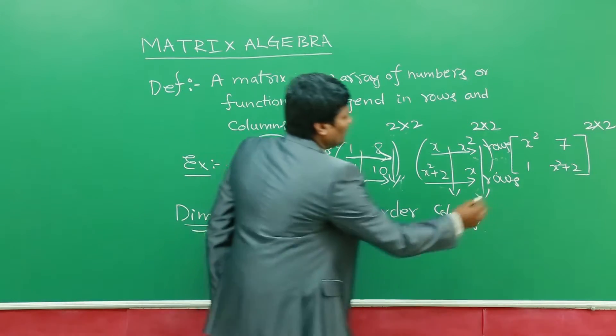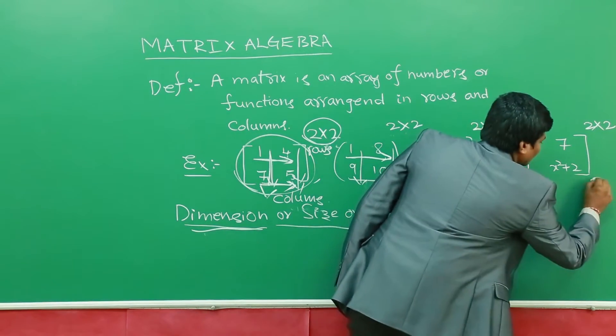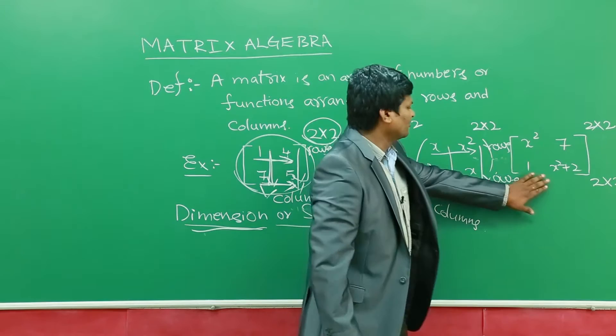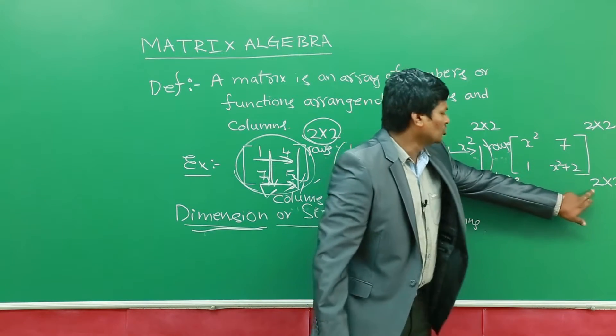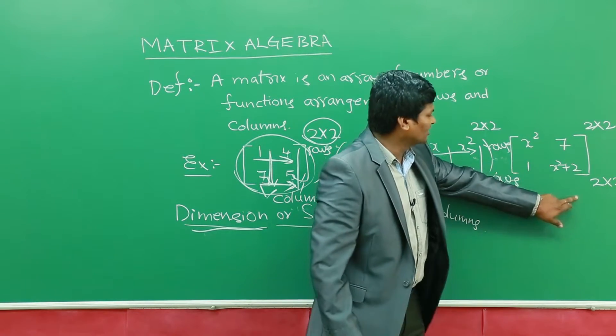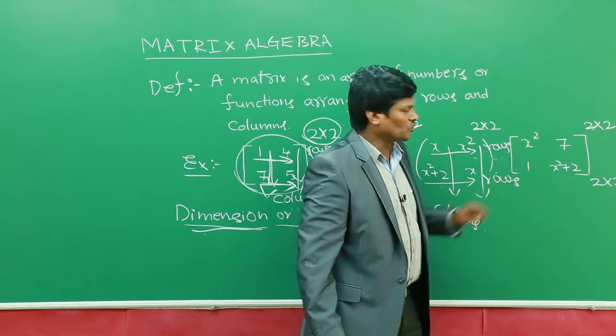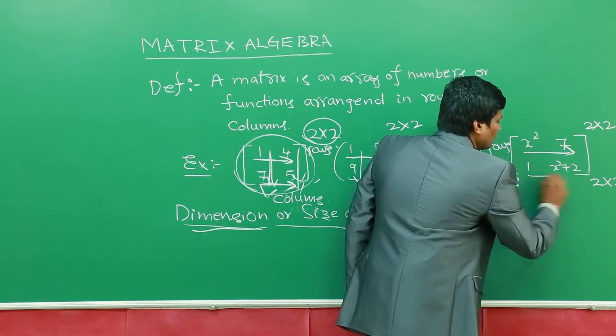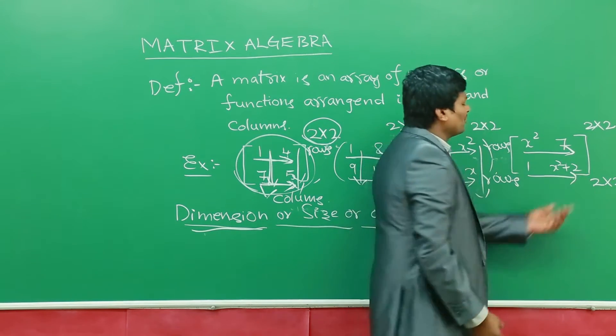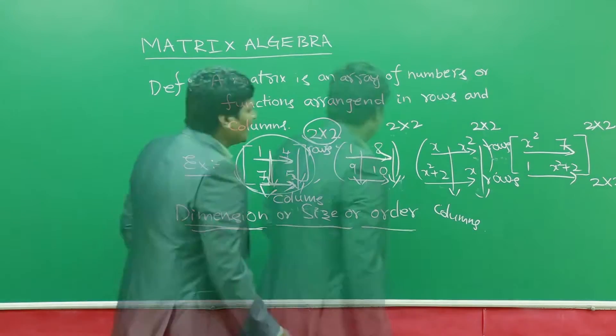Generally we mention the dimension here. The dimension of this matrix is 2 by 2, meaning there are two rows and two columns. First we mention the rows and then we mention the columns.